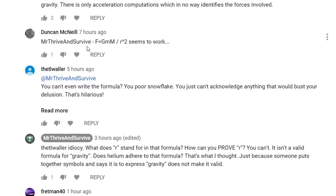Duncan McNeil, Mr. Thrive and Survive. Here's the formula for gravity. F equals GM over big M divided by R squared, or R raised to the second, seems to work. Hmm, does it now? Hmm. Well, we shall see.